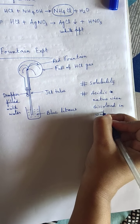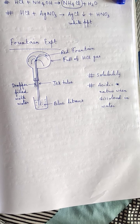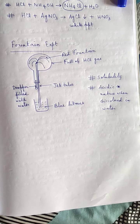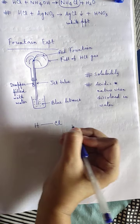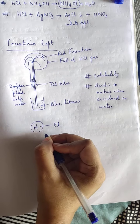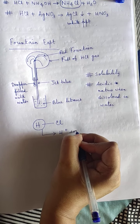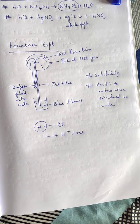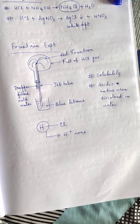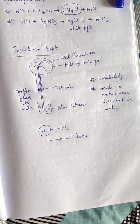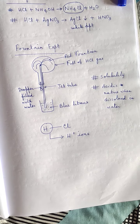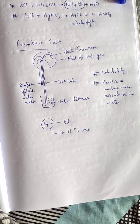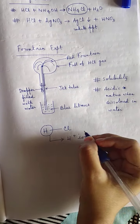HCl gas does not show acidic property and does not conduct electricity in the gaseous state, but it shows acidic property and conducts electricity when dissolved in water. This is because HCl is a polar covalent compound. Acidic property is shown by those substances which produce H⁺ ions in solution. In the gaseous state HCl exists as H–Cl in combined form with no free H⁺ ions, so it doesn't show acidic property. Similarly, for conduction of electricity, solutions only conduct electricity where free ions are present — in the gaseous state HCl produces no free ions.